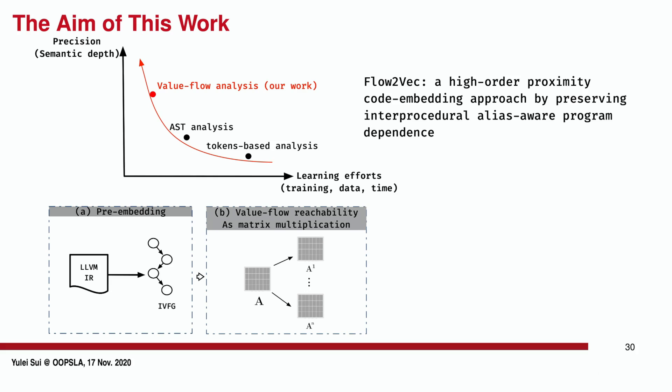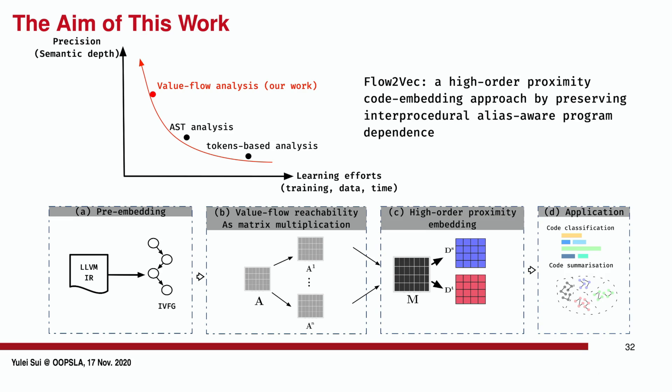The IVFG is transformed into an adjacency matrix A. We then formulate value flow reachability as matrix multiplication to embed context-sensitive value flows through CFL reachability in the low-dimensional space. The resulting matrices are used to approximate a high-order proximity matrix M, which is then decomposed into source and target embedding vectors for each node on the IVFG, in order to preserve asymmetric transitivity of interprocedural value flows. Thus, we can provide better support for subsequent applications.